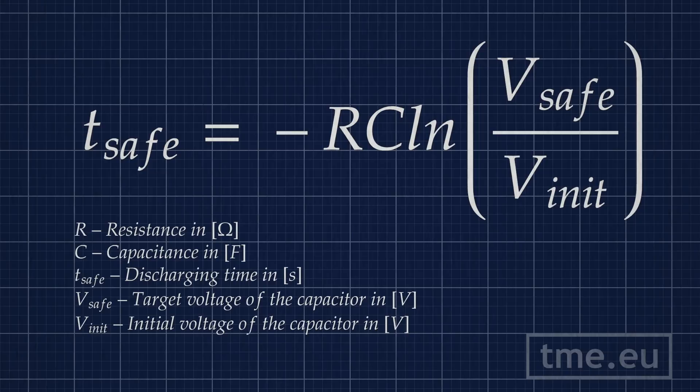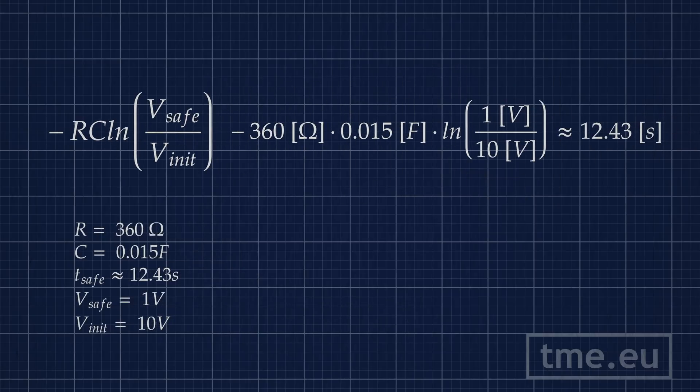t_safe = -RC ln(V_safe / V_init). Here R is resistance, C is capacity, V_safe is the desired voltage you want to achieve, and V_init is the initial voltage on the capacitor. T_safe is the time that will take to reach that desired voltage. So for example, our desired safe voltage is 1 volt. As you remember, the resistance is 360 ohms, the capacity is 15,000 microfarads, and the V_init is 10 volts. For most cases, 5 tau is enough time to discharge the capacitor almost completely.